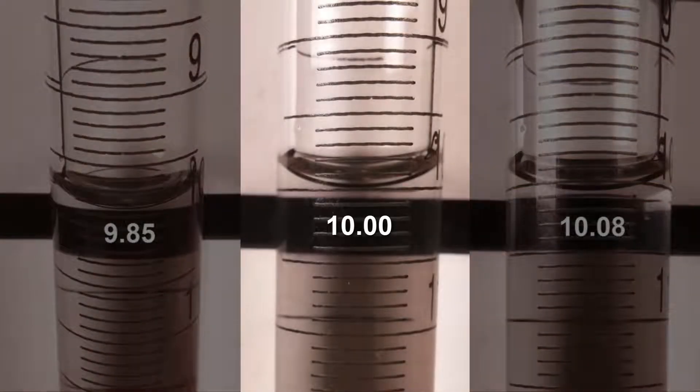In the last example, the meniscus is at eye level and in this case the encircling ring from the 10.00 milliliter mark appears as a single line. In this case the proper reading of 10.00 can be achieved.